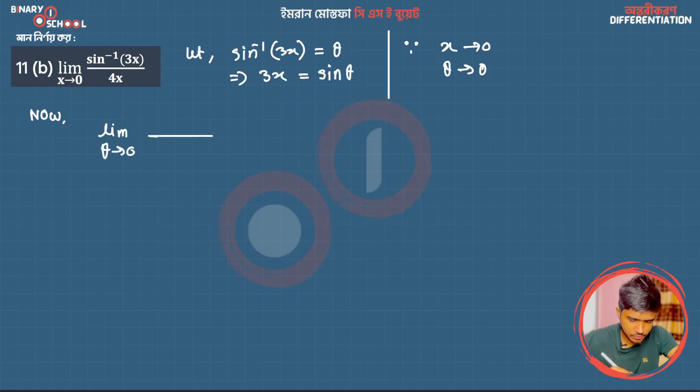Sin inverse 3x becomes theta. And x becomes theta by 3. So we have 4x which is 4 into sin theta by 3. Taking out the constant 3, we can rearrange the terms with 3x and 4x.